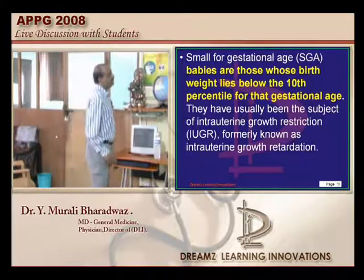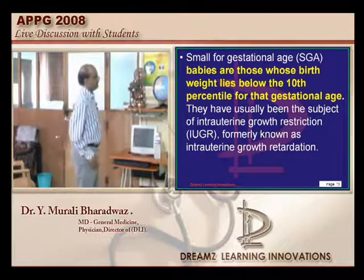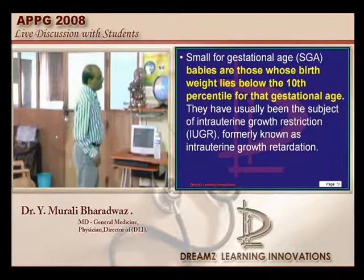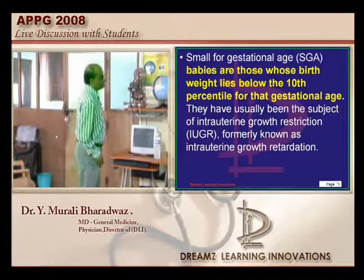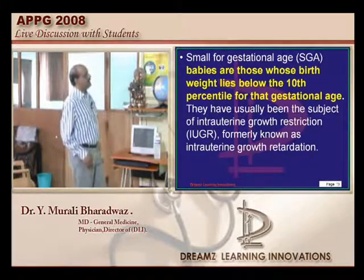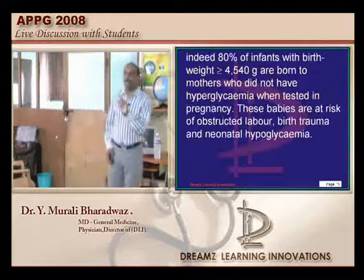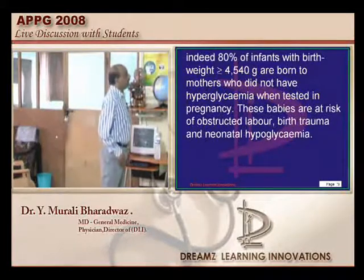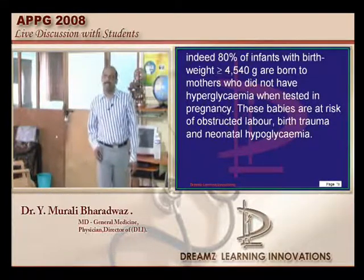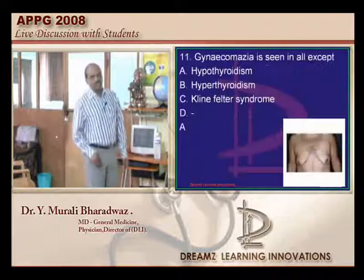Small for gestational age babies are those whose birth weight falls below the 10th percentile of gestational age. They typically have complications such as respiratory distress, hypothermia, polycythemia, and hypoglycemia. However, intraventricular hemorrhage is not a complication if they are full term. Only when they are preterm does intracranial hemorrhage become a complication.